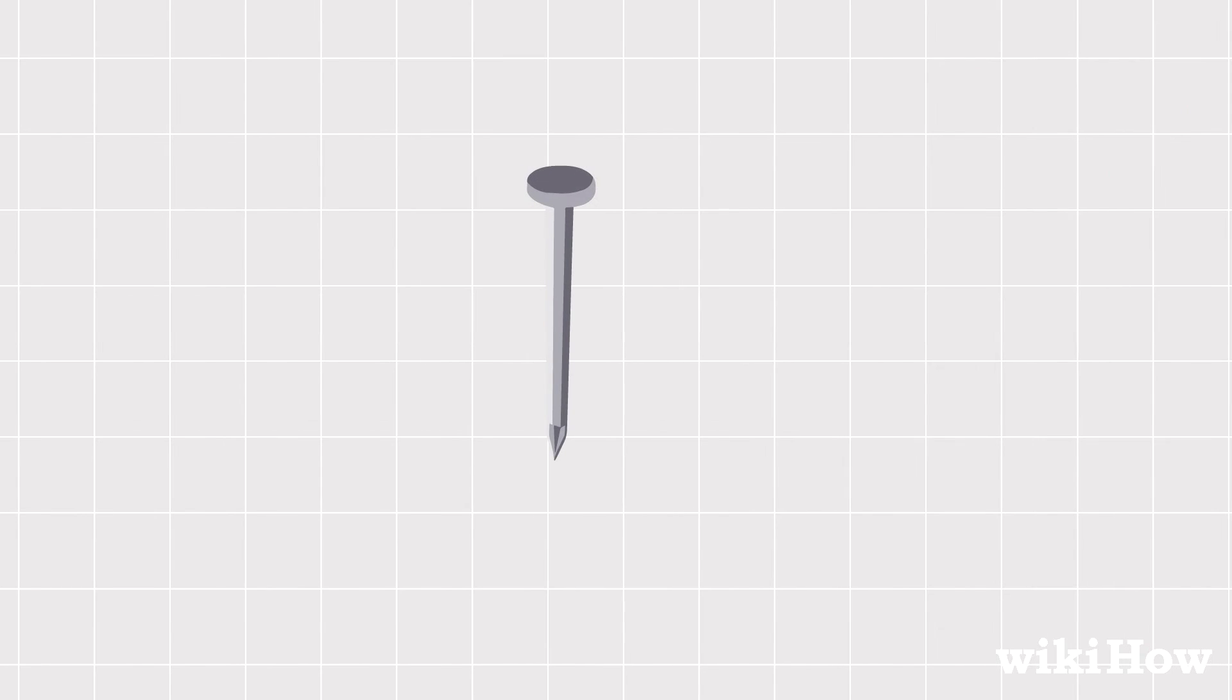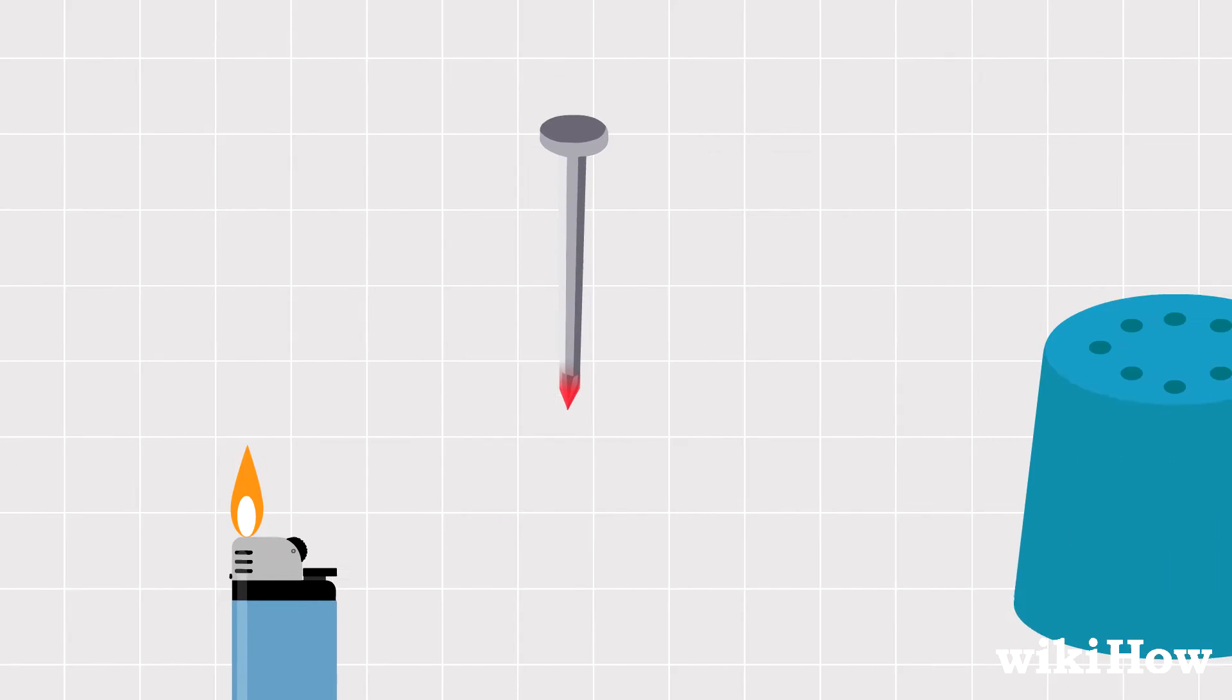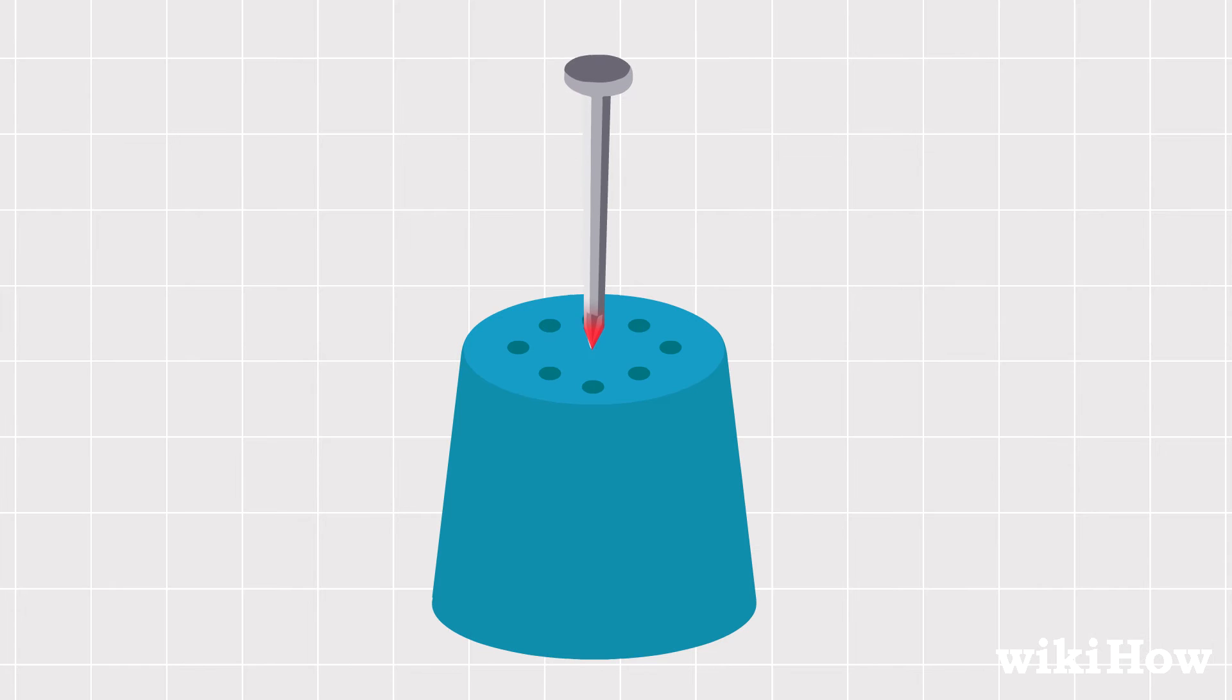Then heat the end of a nail or needle with a lighter and make a small hole in the cap with it. Reheat the nail and make several more holes in the cap for the water to pour out of.